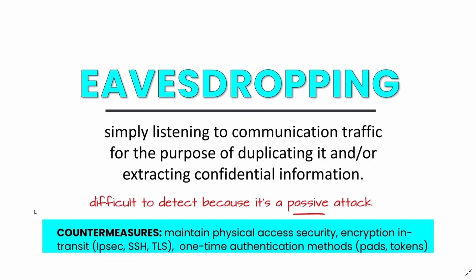Another type of network attack is eavesdropping — simply listening to communication traffic for the purpose of duplicating it and/or extracting confidential information. It is difficult to detect because it is a passive attack. Countermeasures include maintaining physical access security, encryption in transit, and one-time authentication methods.